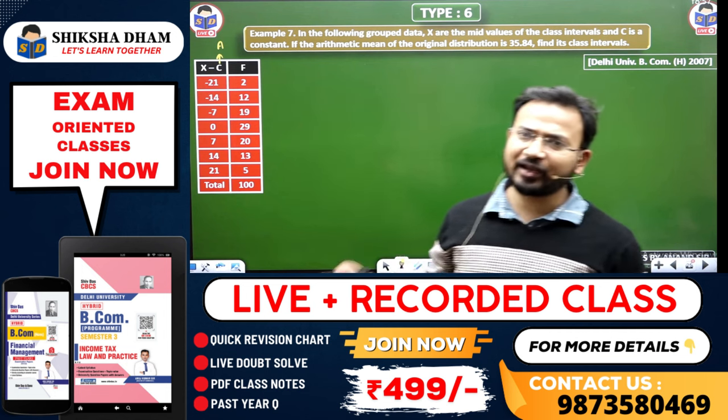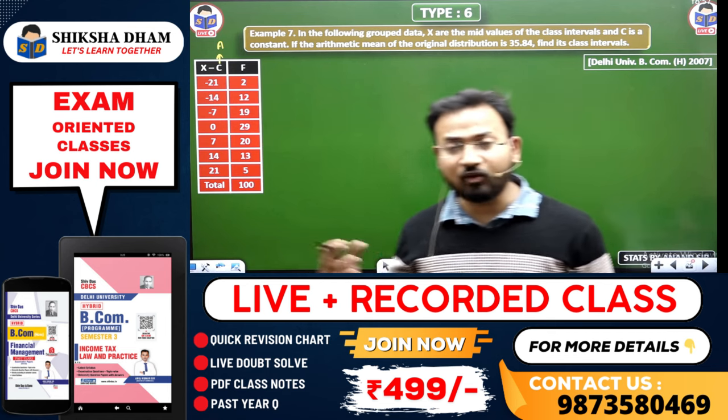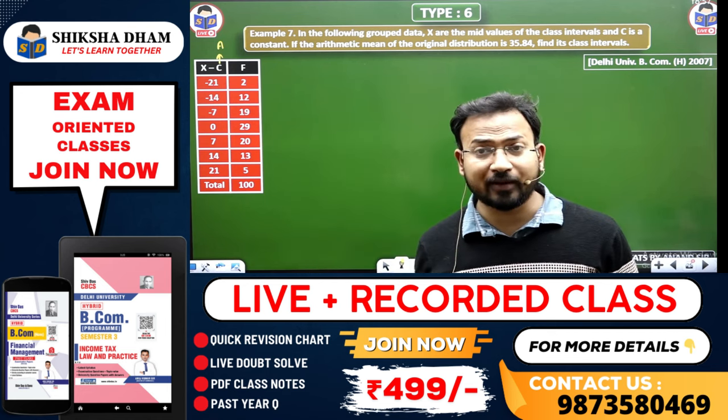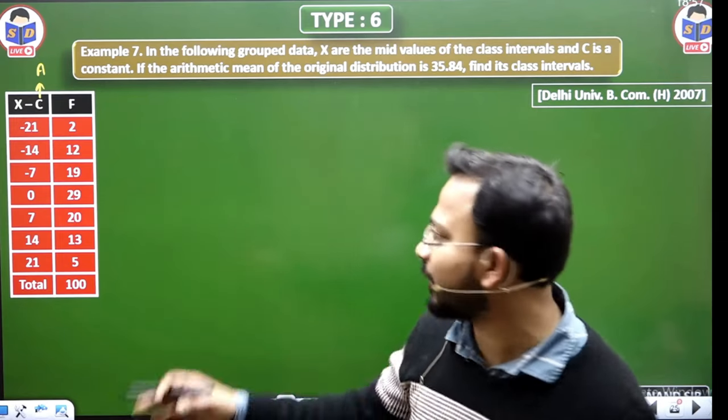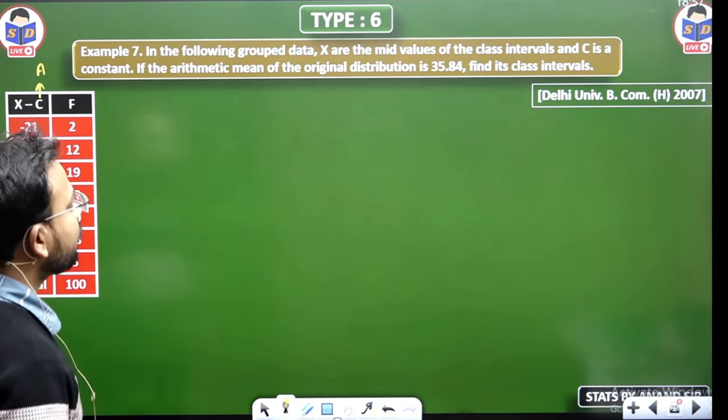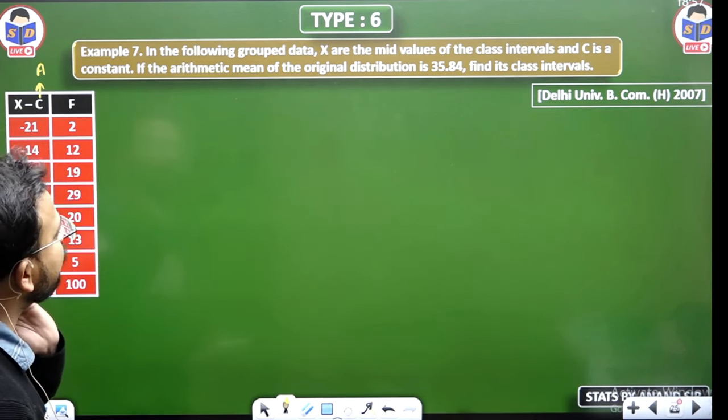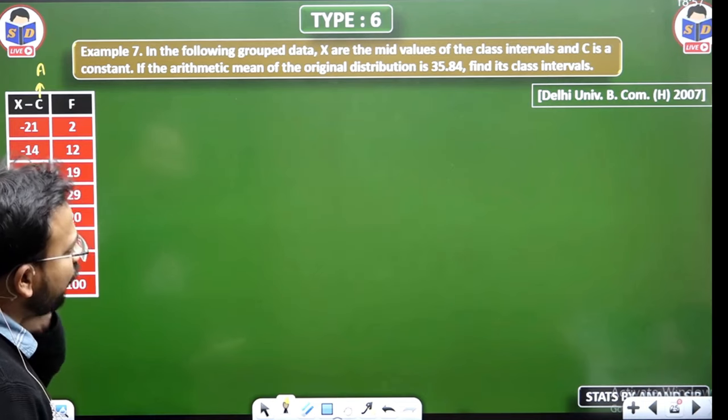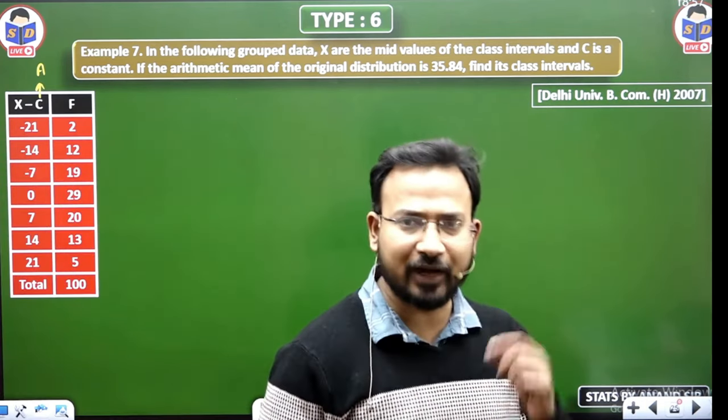So here, what is it, that you don't have an exclusive series given, the mid-value, you don't have to remove the mid-value, you don't have to remove the difference between C minus. Here, the information is given to you and the series is the constant, if the arithmetic mean of the original distribution is 35.84, then find the class interval. Okay, class interval find you. We have an exclusive series within this.